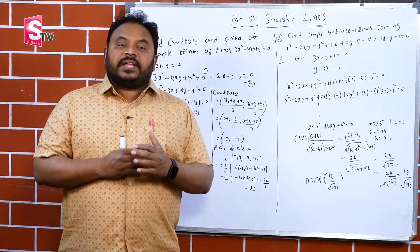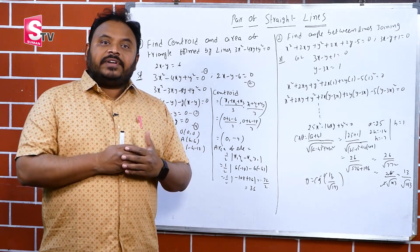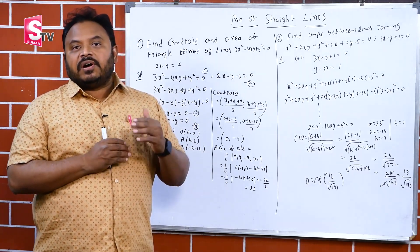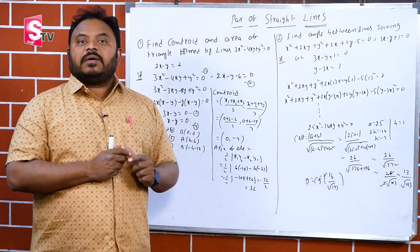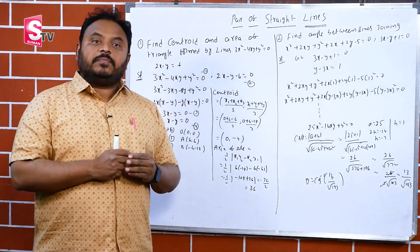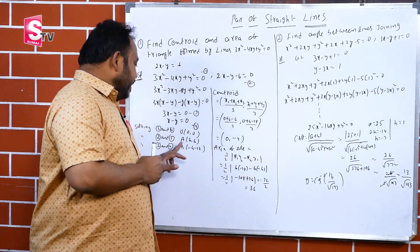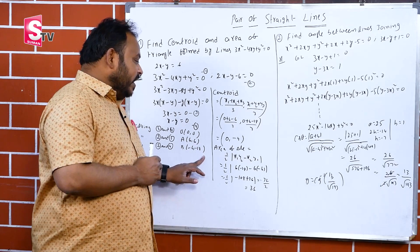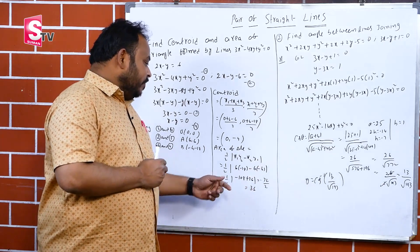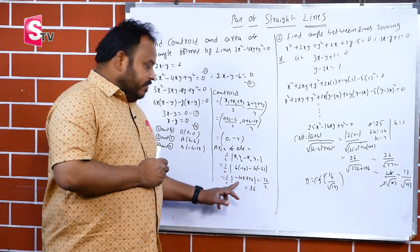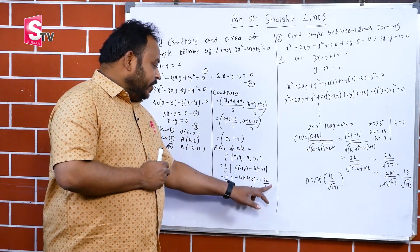For the area of the triangle with vertices O(0,0), A(6,6), B(−6,−18): since one vertex is the origin, area = ½|x1·y2 − x2·y1| = ½|6×(−18) − (−6)×6| = ½|−108+36| = ½×72 = 36 square units.